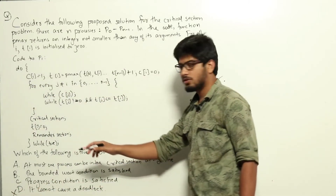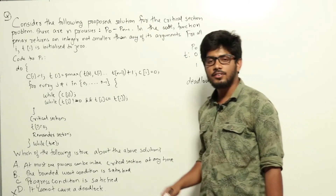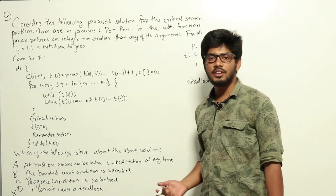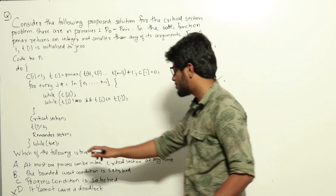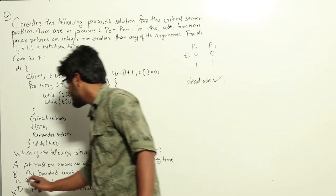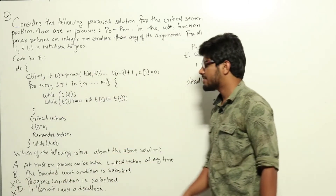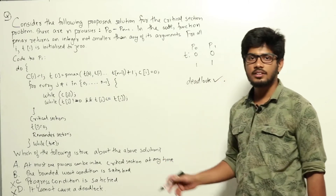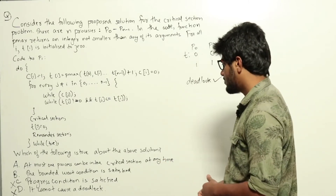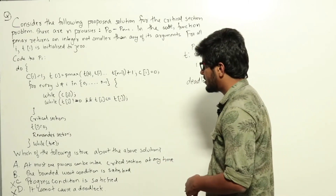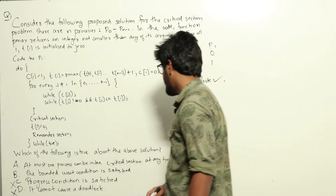Now look at option C: progress condition is satisfied. If there can be a deadlock, then definitely there can't be progress. So option C is also false. If progress were satisfied, it would mean deadlock never occurs. So we have eliminated both options C and D, leaving only options A and B.